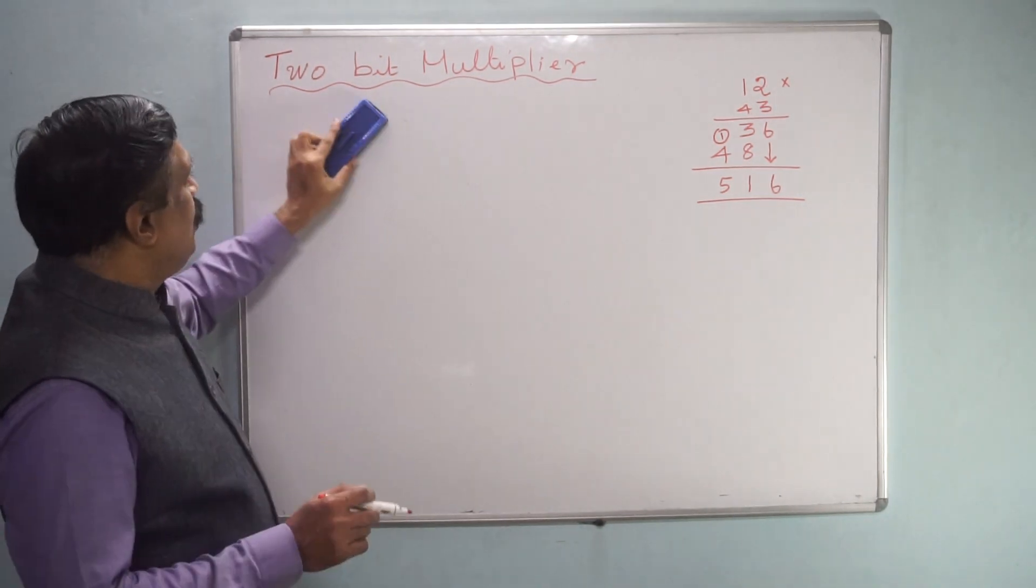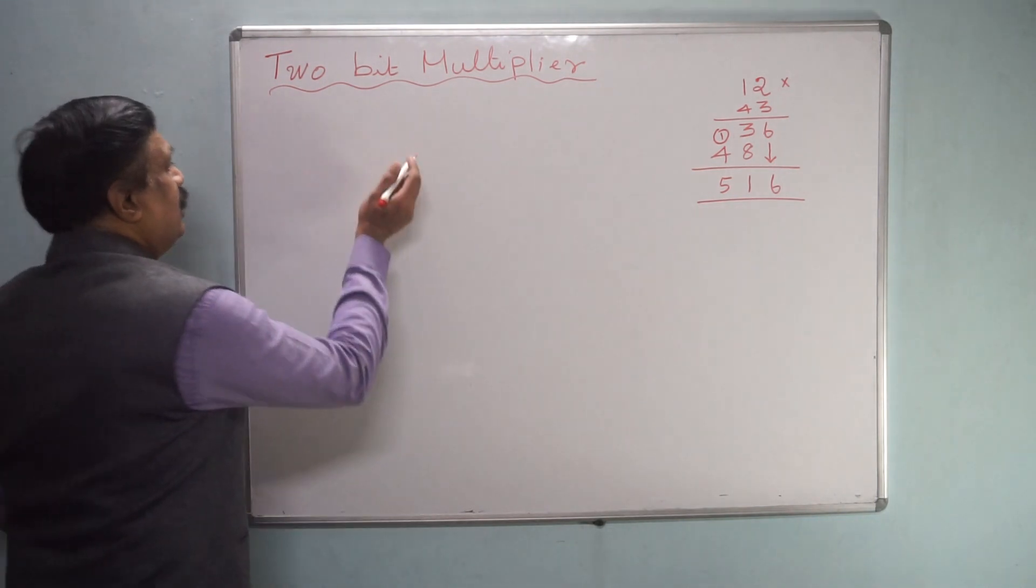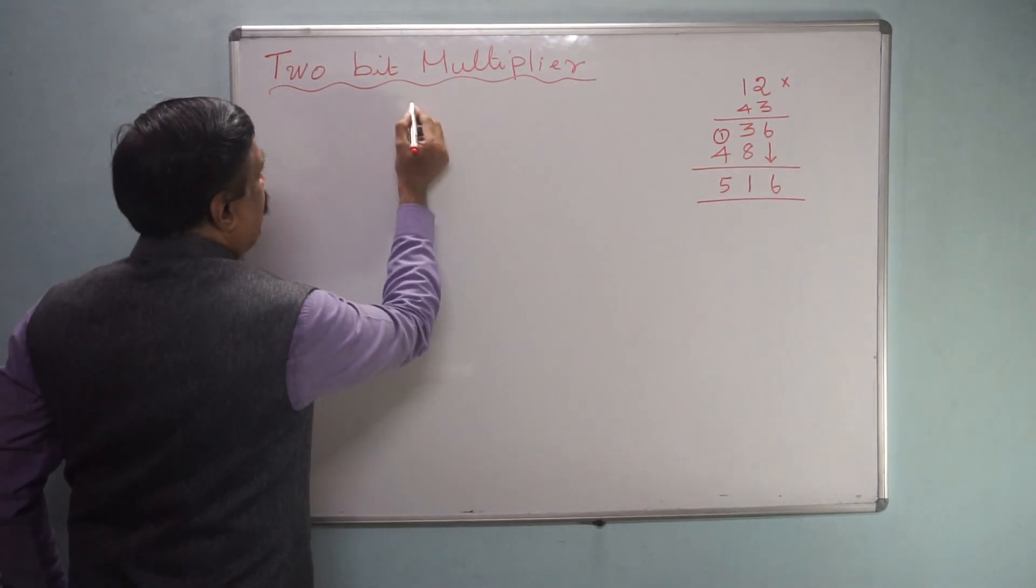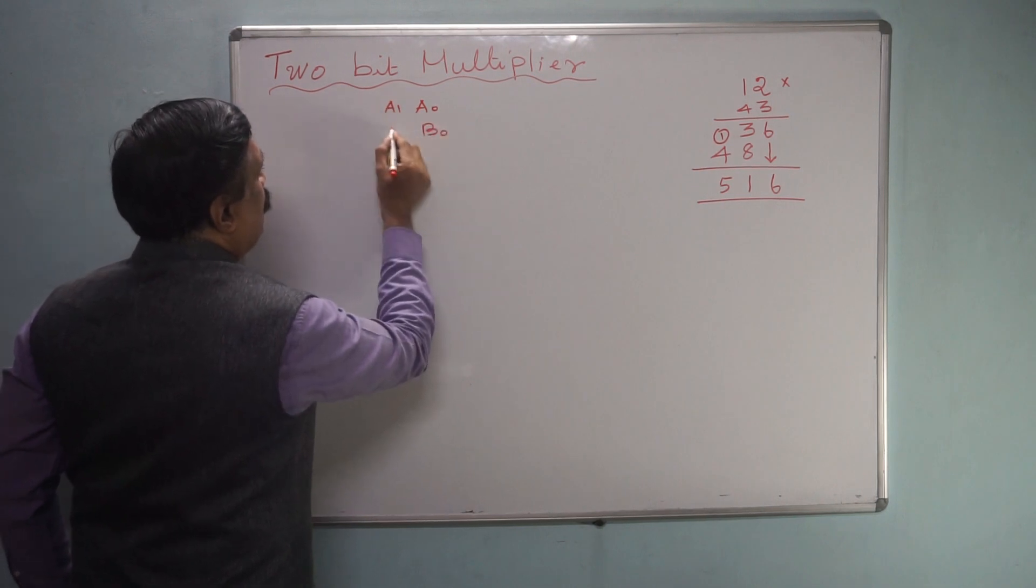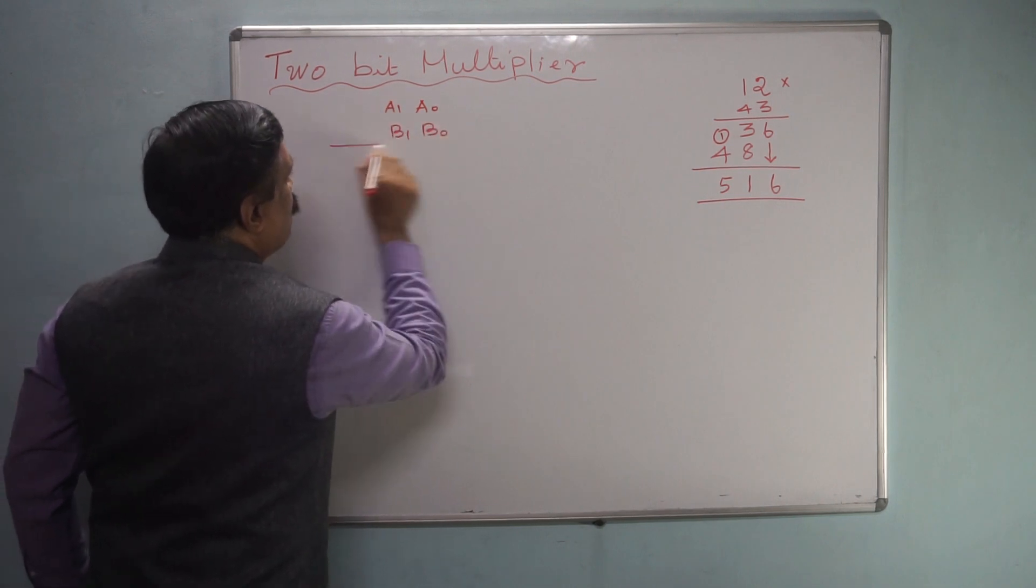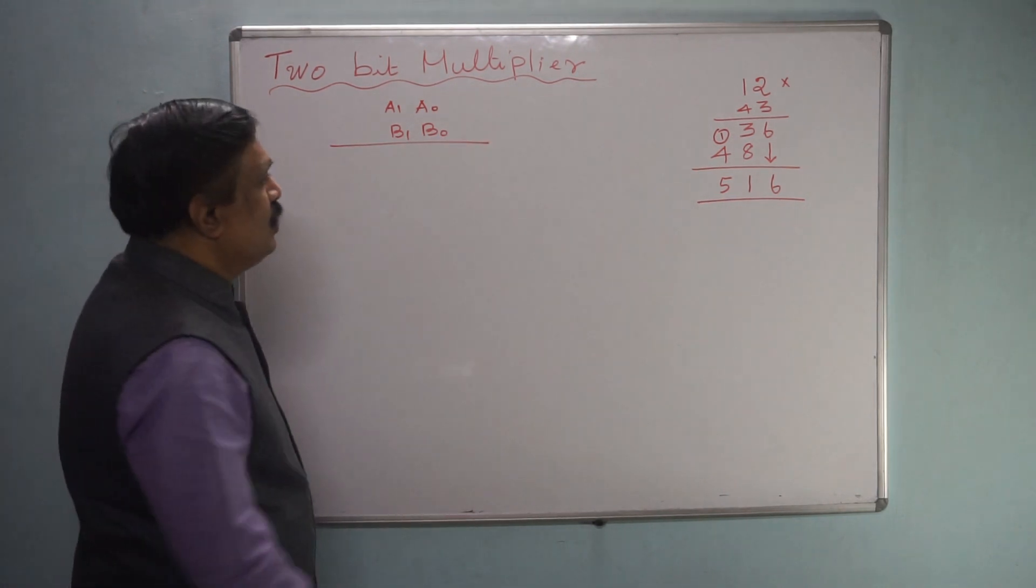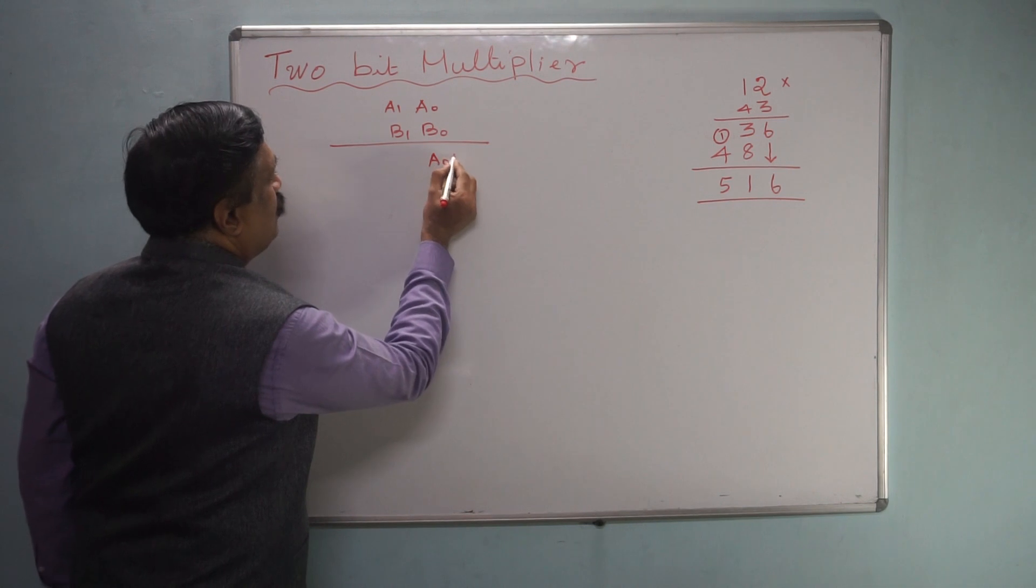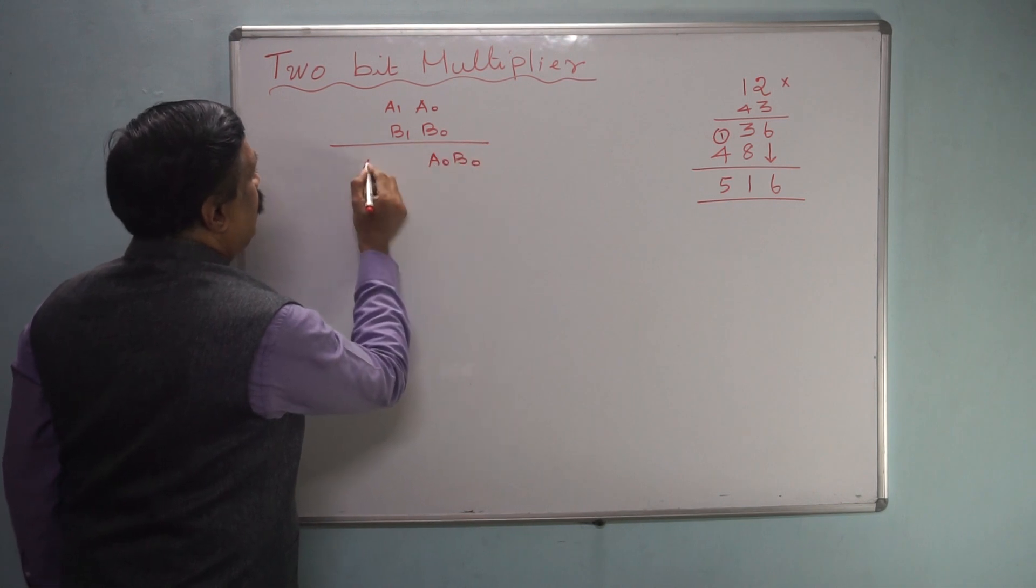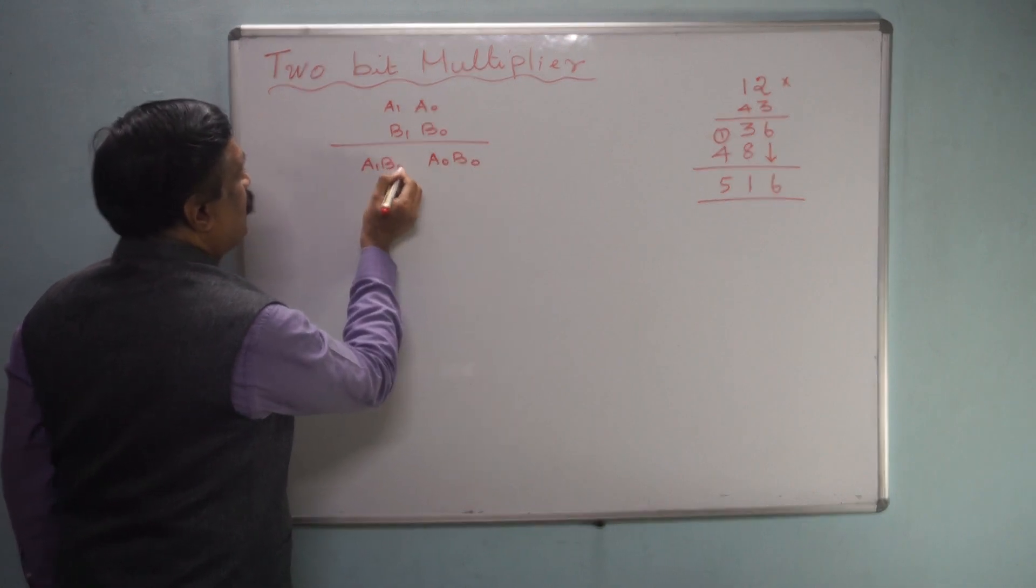Now we have to multiply this. Now I will follow the same pattern, that means A0, A1, B0 and B1, just you multiply. How you multiply first B0, therefore A0, B0 and then A1, B0.